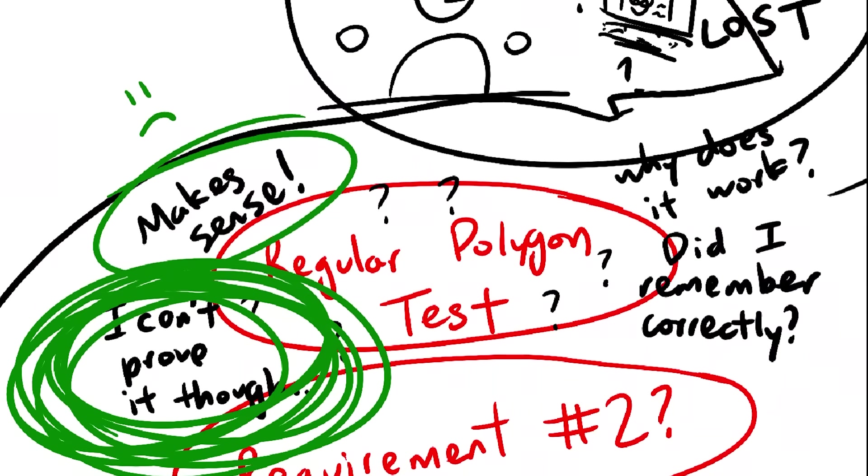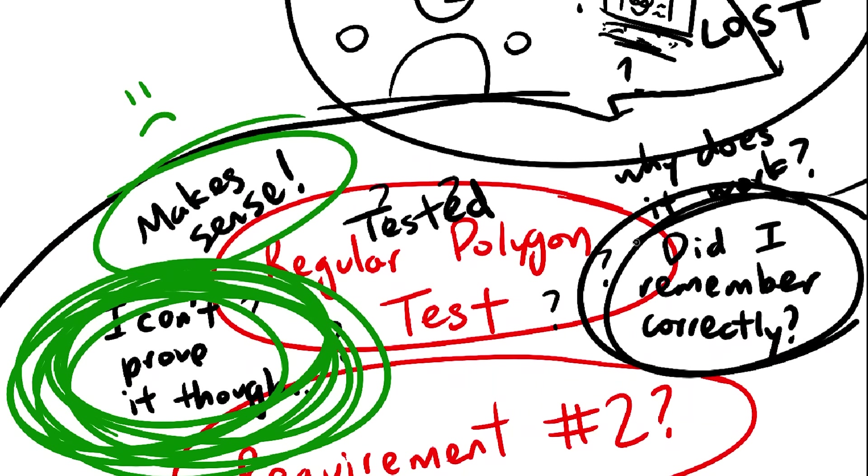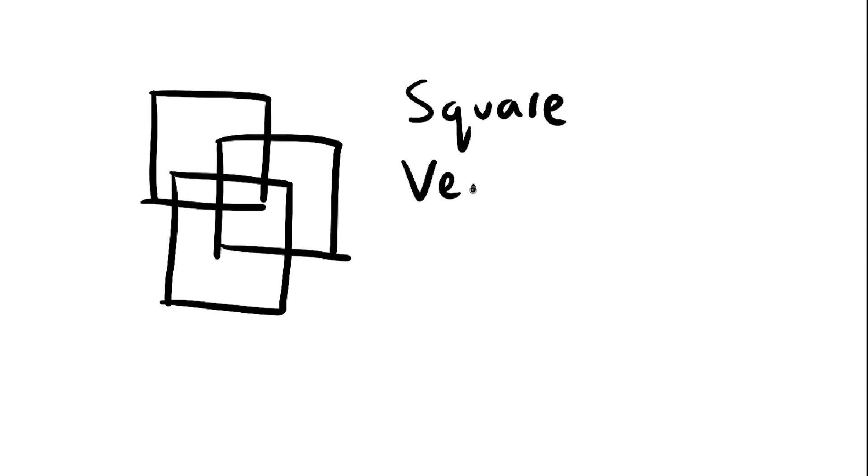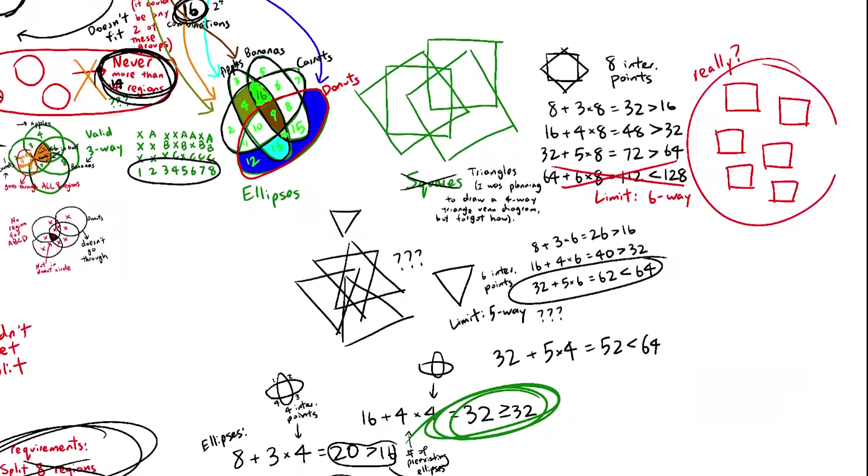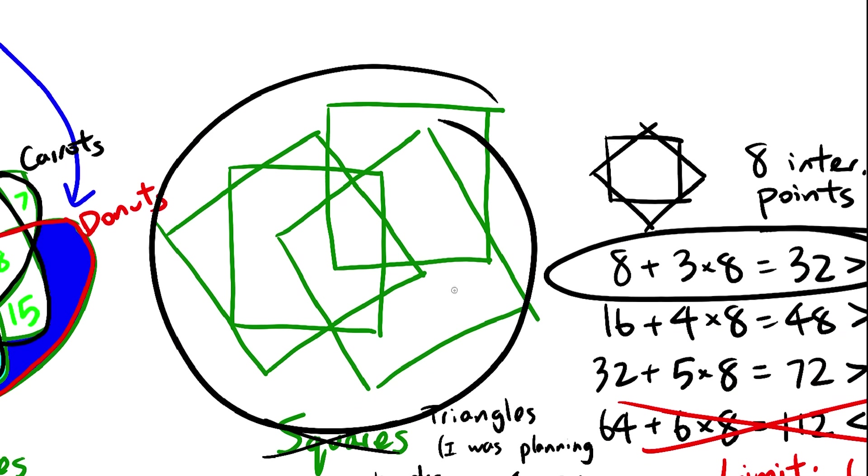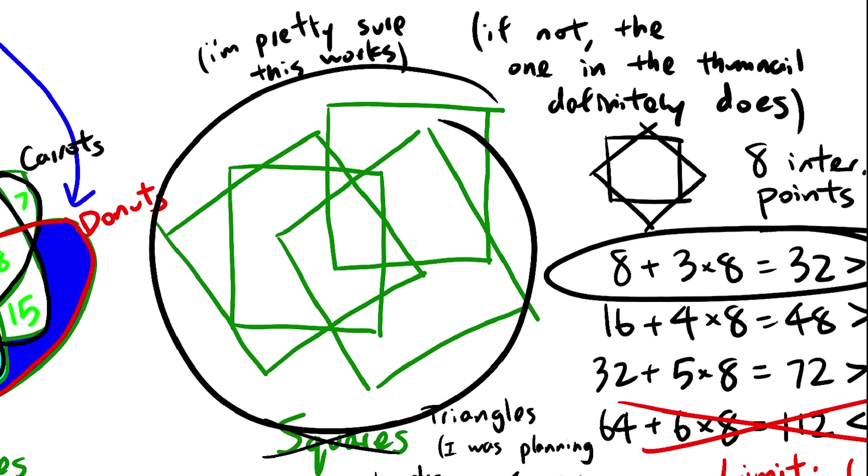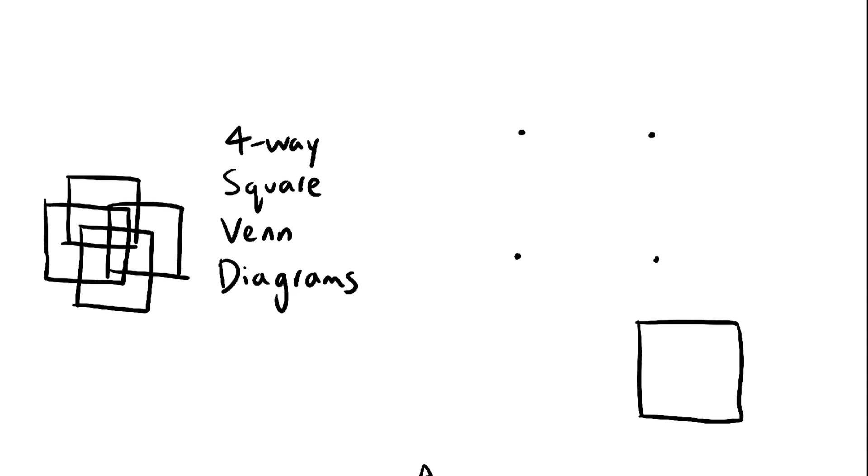Oh, one more thing. I tested the regular polygon test a bunch to make sure I didn't misremember it, or something like that. And it worked for everything except square Venn diagrams. Say I want to make a 4-way square Venn diagram. By the intersection point test, this is possible. And it does turn out to be possible. This is a valid 4-way square Venn diagram. But the regular polygon test says it's not possible for some reason.